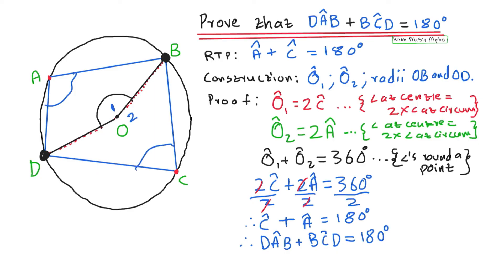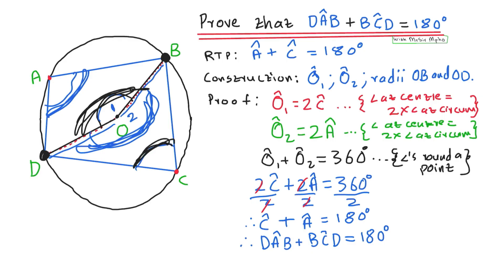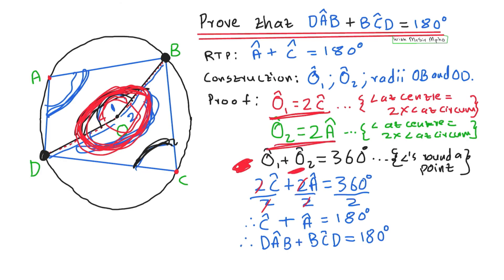Remember the flow: construct the radii, label your centers O1 and O2, show O1 equals 2C and O2 equals 2A using angle at center twice angle at circumference, then add O1 plus O2 equals 360 using angles around a point, substitute, then divide by 2. That's the complete flow — you can never forget this.